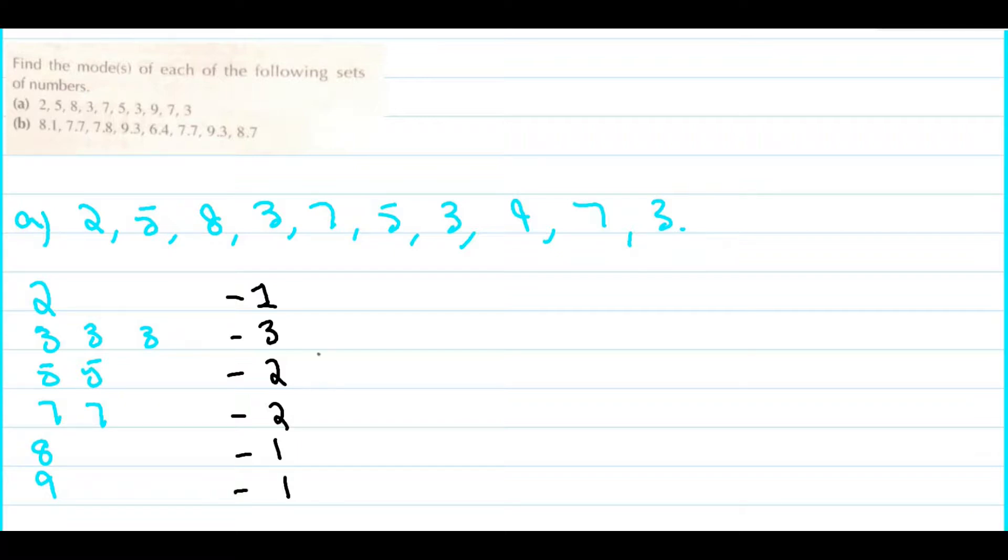Which number is the one which has occurred the most frequently? Yes, it is 3. Therefore, your mode for this question would be 3.